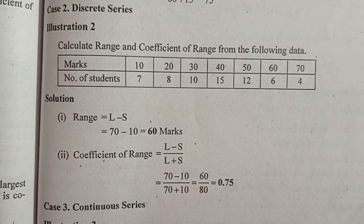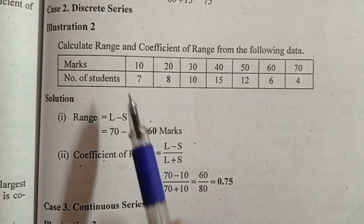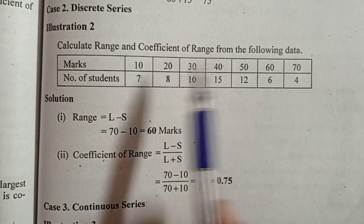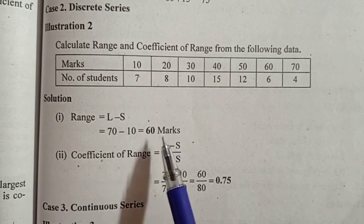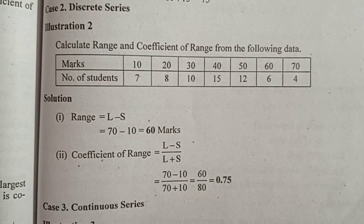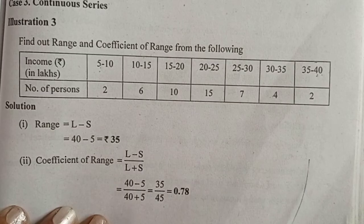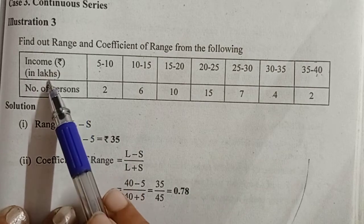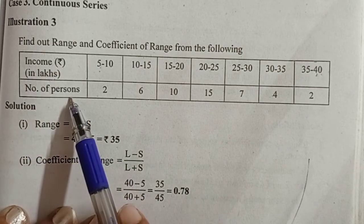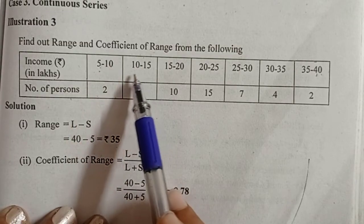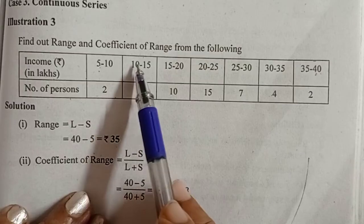Next case: continuous series. Income and number of persons are given. Here, we have a continuous series. There is no gap between the classes.